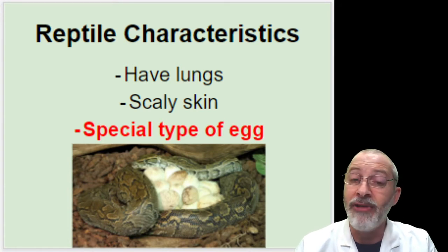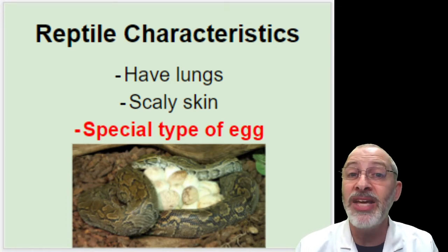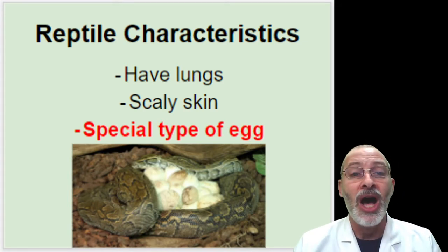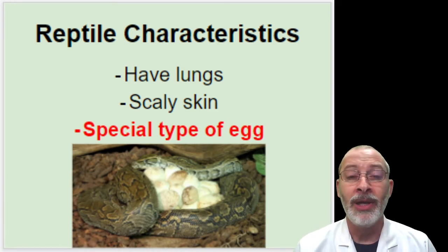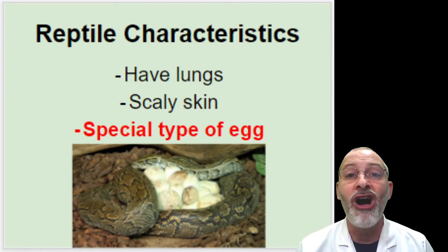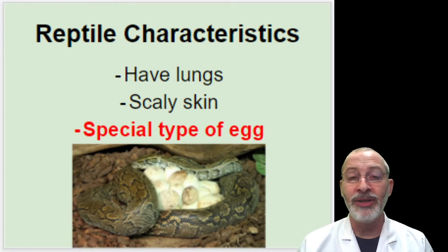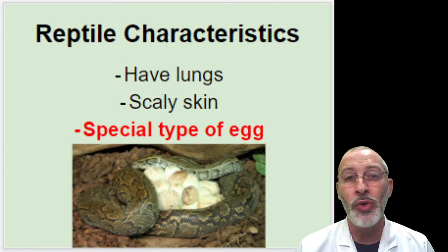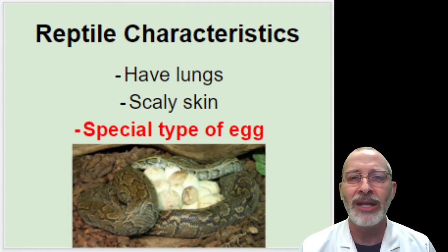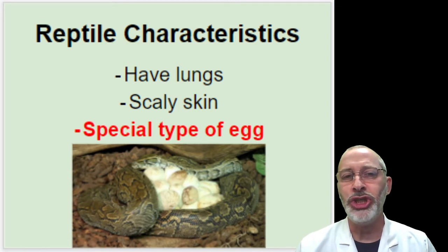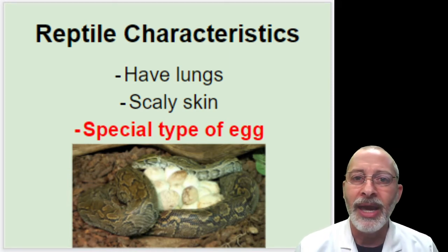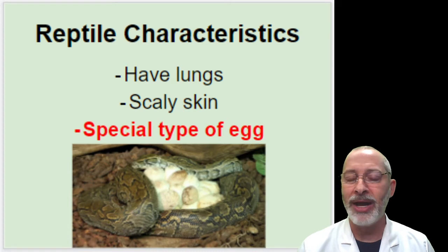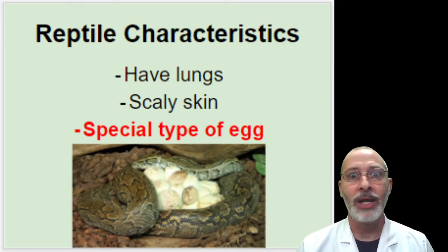Another characteristic of reptiles is that they have a special type of egg. Unlike amphibians — if you think about frogs, maybe some of you have seen ponds with frog eggs during the springtime. Frog eggs look like a clear jello-like material with black or brown dots in the middle. They're very gelatinous, a little slimy, because they're laid in the water. The water holds them up, surrounds them, and protects them, and there are lots and lots of them.